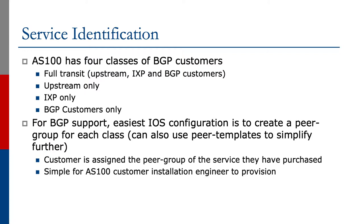For BGP support, the easiest Cisco IOS configuration is to create a peer group for each class, even though Cisco has allegedly deprecated this feature. In their documentation, they say it's an old feature and you shouldn't use it. But for ease of configuration for IOS, we recommend using a peer group. You can also use peer templates, which is the new thing, to simplify a bit further.